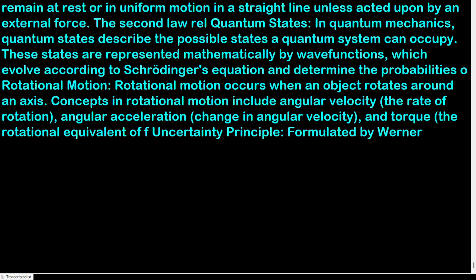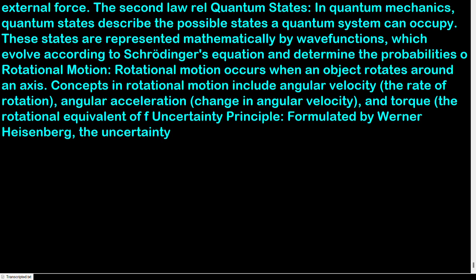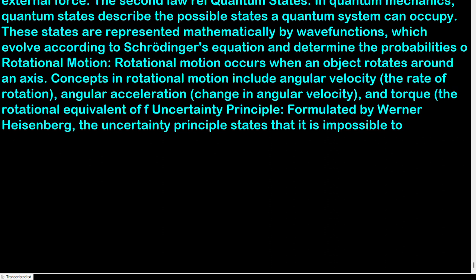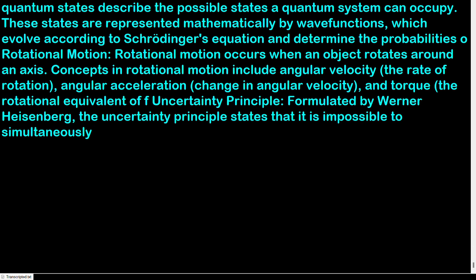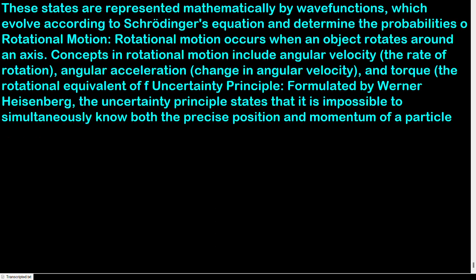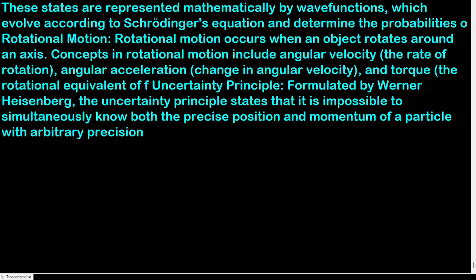Uncertainty principle, formulated by Werner Heisenberg: it is impossible to simultaneously know both the precise position and momentum of a particle with arbitrary precision. This fundamental limit arises from the wave-like nature of quantum systems.